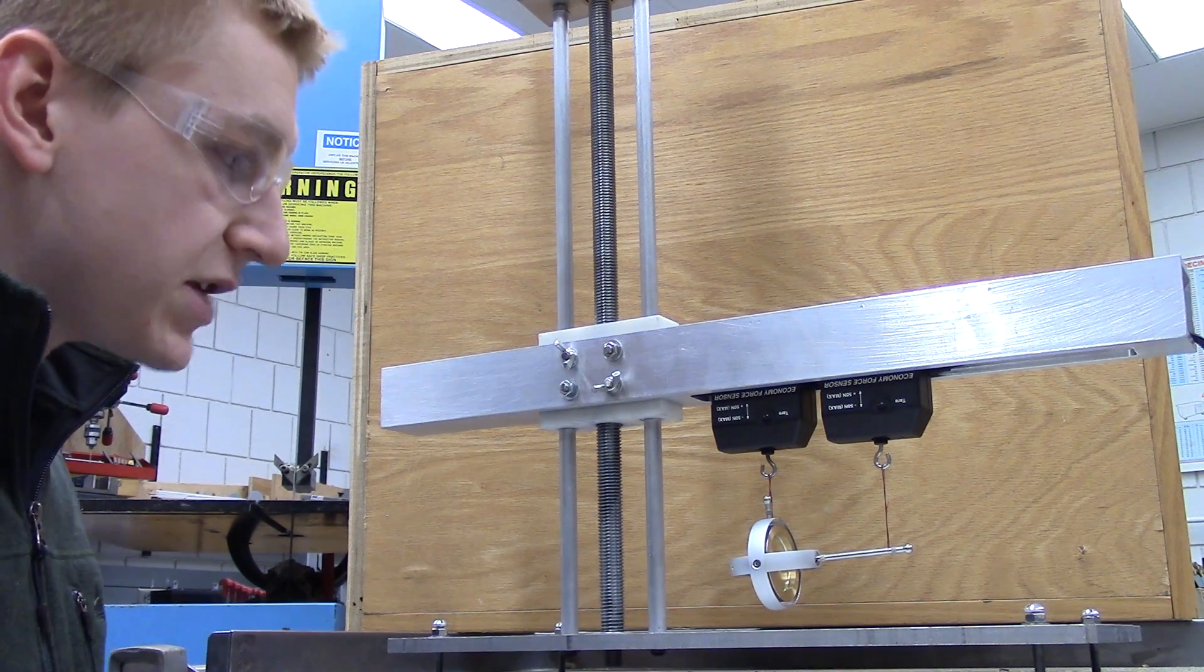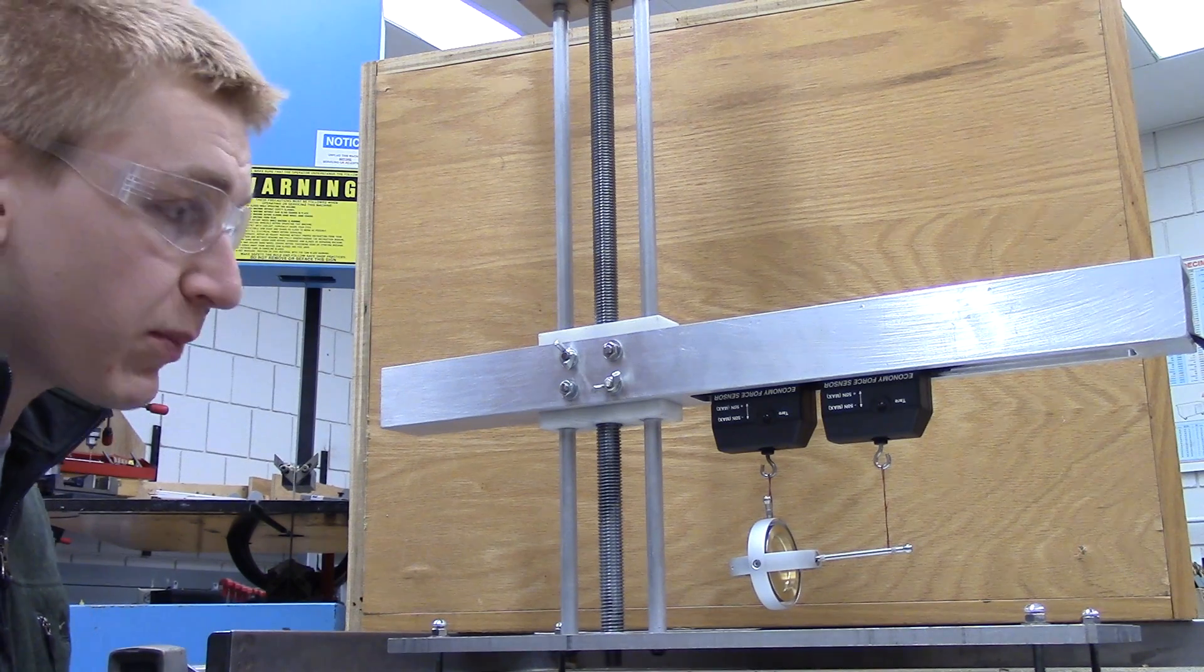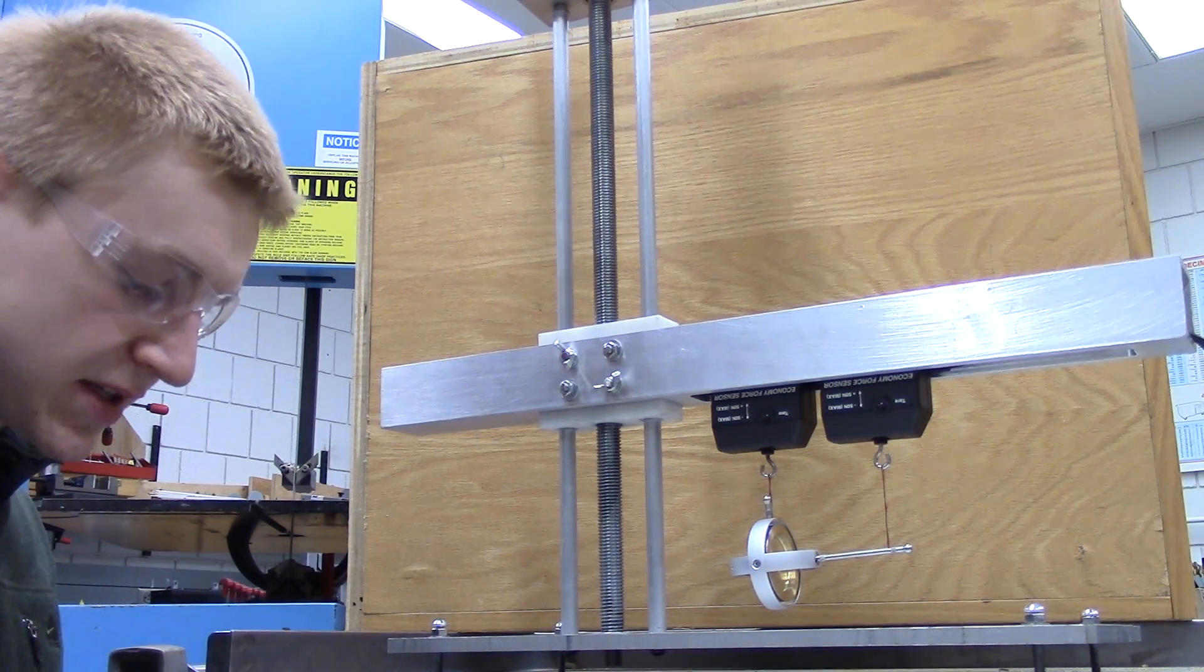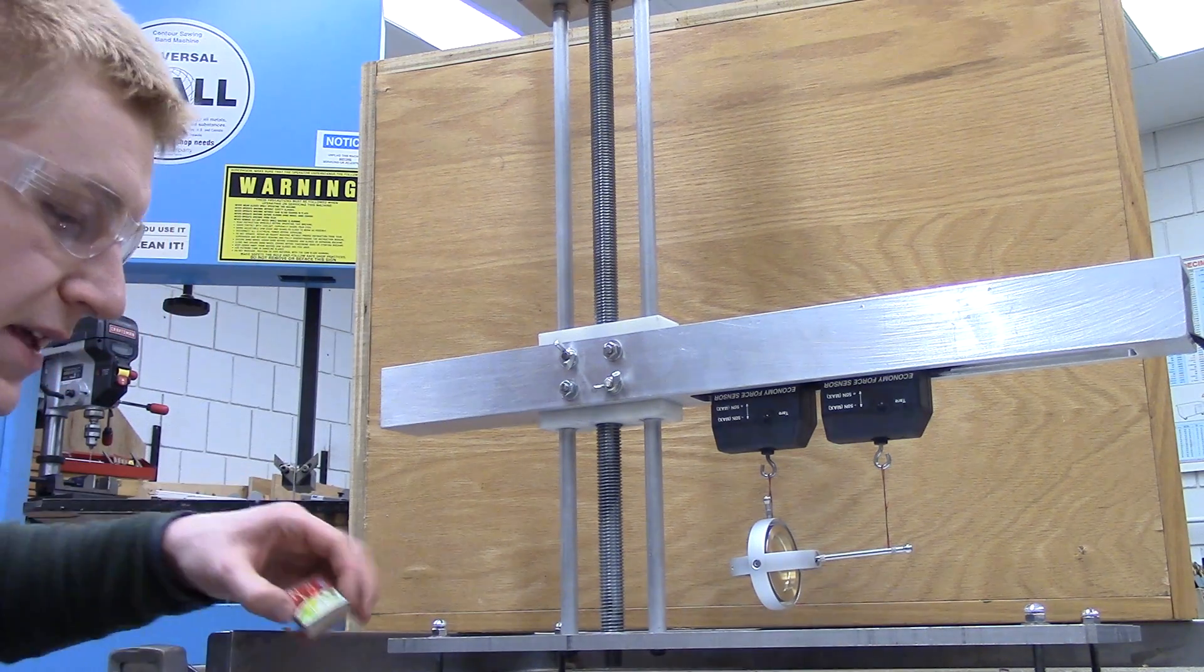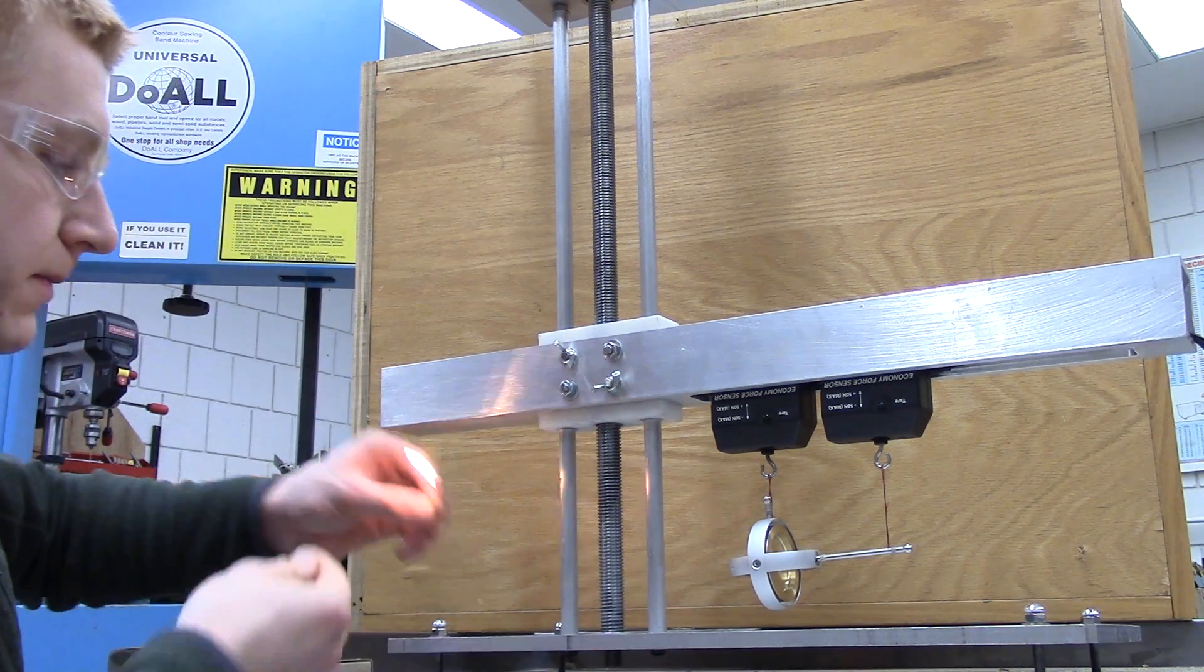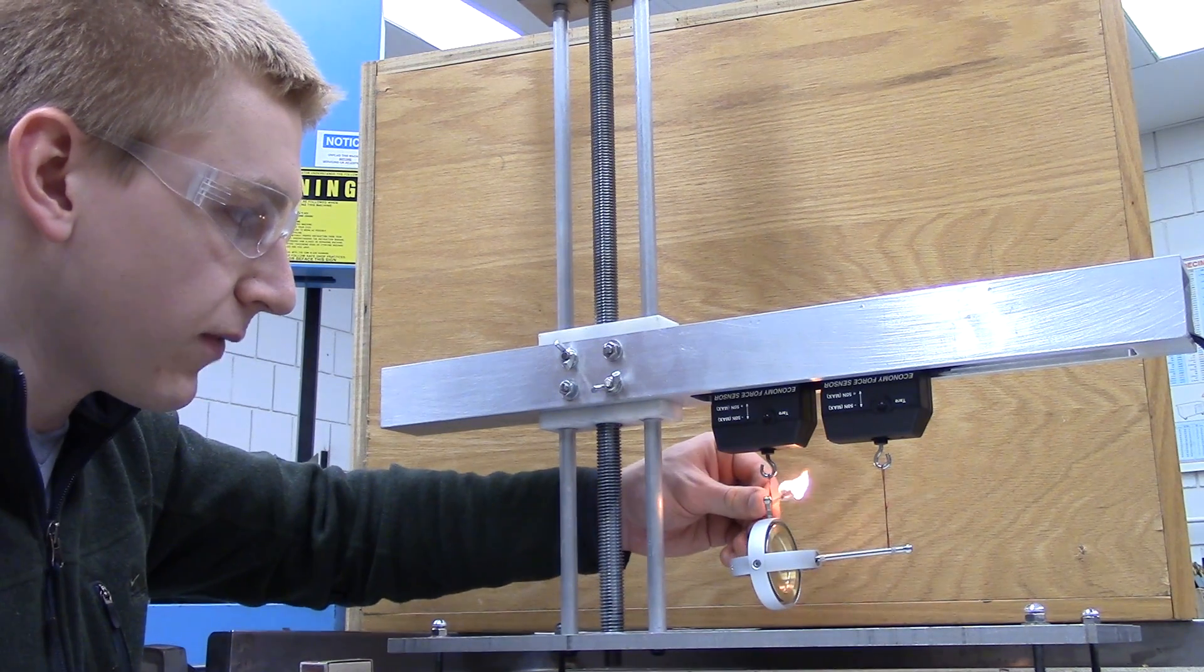For the second stage, I want to weigh the gyroscope while it's precessing. To make it precess, I'm going to burn away the support string of the main body. Now you're going to see the gyroscope wobble a little bit. But that's because it has to fall a short distance in order for precession to start.